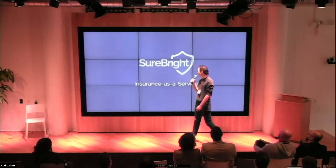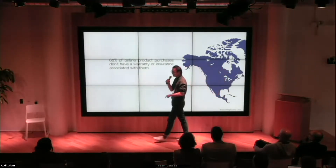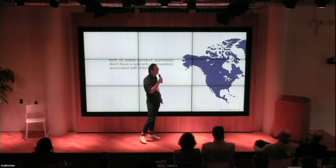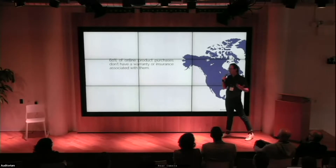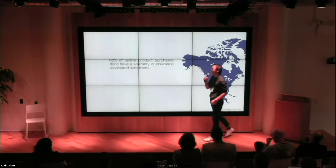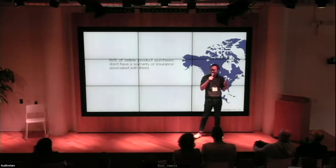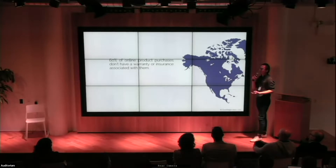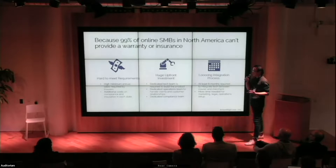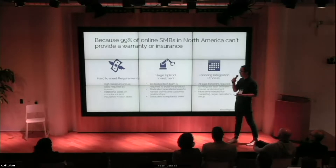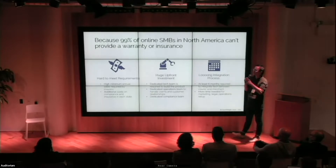Thank you. My name is Kai. I'm the co-founder of Sherbrite. We are building an embedded insurance and service platform for everyone. If you've ever bought anything at Best Buy, you know at checkout they always try to sell you an extended warranty or insurance plan. We looked into Best Buy's 2021 financial statement and were shocked to find that over half of their net income comes from warranties — it's a highly lucrative product. But today, 60% of online products being sold don't have a warranty or insurance attached, and 99% of small e-commerce businesses in North America cannot provide that.